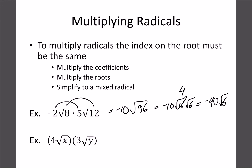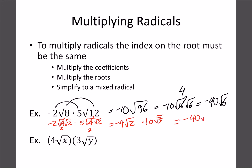You can multiply first then simplify, or simplify first — both work. Going back to the original: root 8 becomes 4 and 2, giving negative 4 root 2 for the first term; root 12 becomes 4 and 3, giving times 10 root 3. Multiplying those gives negative 40 root 6 — the same answer either way. Generally, if numbers are small I multiply first then simplify; if the numbers are large and would give really big root numbers, it's probably better to simplify first.